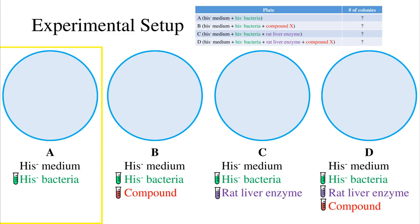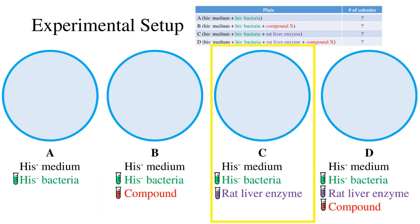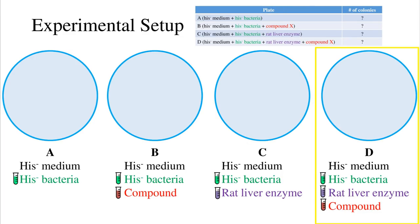This reverse mutation from hist-minus to hist-plus allows them to synthesize their own histidine and thus survive in hist-minus medium. Plate B has the compound in addition to the hist-minus bacteria and the hist-minus medium, showing the mutagenic properties of the parent compound. Plate C is another control plate with rat liver enzyme plus hist-minus bacteria in hist-minus medium. The purpose of rat liver enzyme is to simulate the human body, since bacteria don't have enzymes that can change the compound but humans do. Plate D models the activity of the compound in our body once it's metabolized.